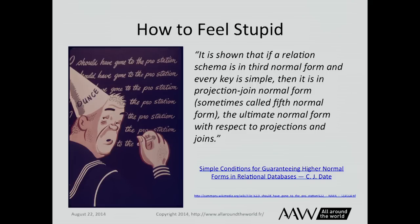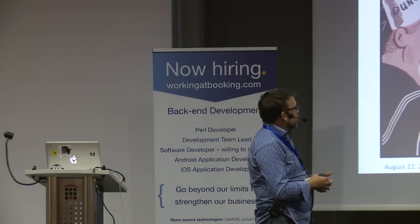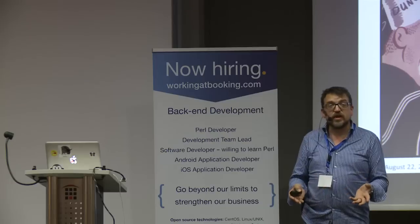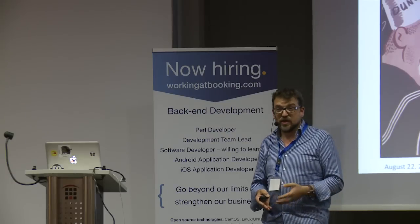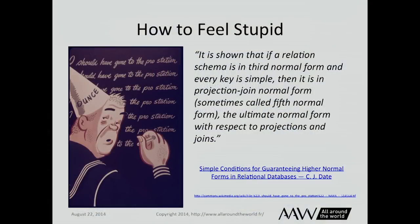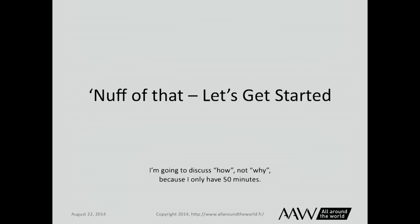It has been shown that if a relationship is in third normal form and every key is simple, it is in projection normal form — sometimes called fifth normal form, the ultimate normal form with respect to projections and joins. What does that even mean? This is what happens when developers try to learn about databases without getting deep into theory — they get stuck and don't understand it. So forget about all that; let's just get started.